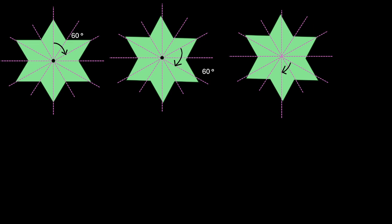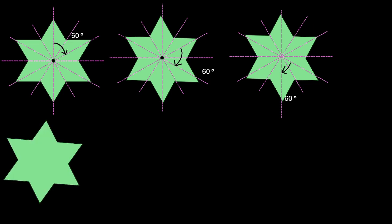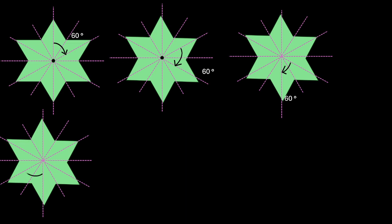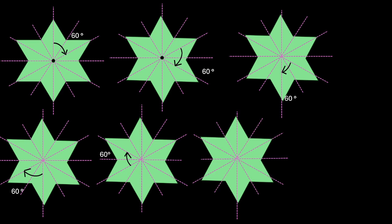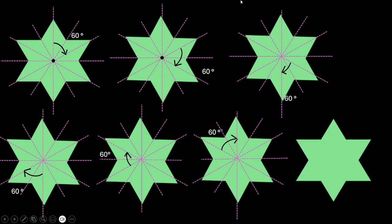So let us rotate the star by 60 degrees clockwise. It looks like this after the first rotation. Let us rotate it one more time — it looks like this. After the third rotation it looks like this, then one more time it looks exactly the same, then one more rotation, and after the last rotation when it completes a circle of 360 degrees, it looks like this. So we rotated it 1, 2, 3, 4, 5, 6 times. Its order of rotation is 6.